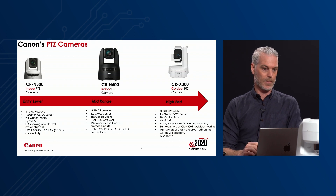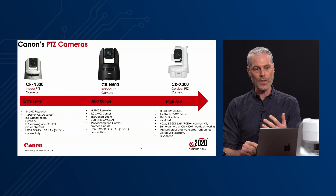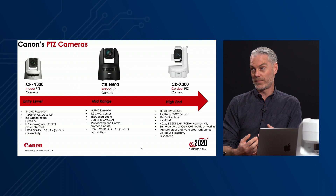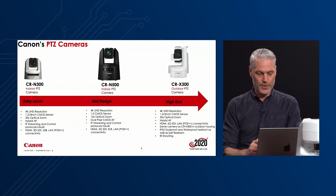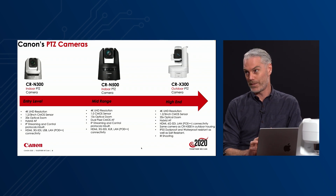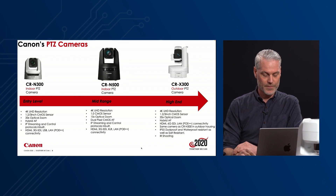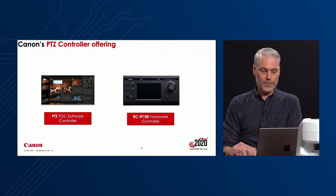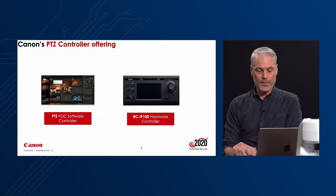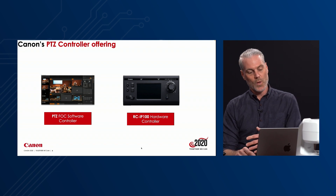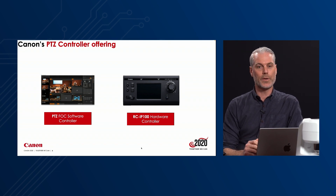The CR-N500 is the top indoor model. It has a larger sensor with less zoom range due to the sensor size, but it has a better autofocusing system compared to the CR-N300. As for the controller offering, we have the free-of-charge software controller — the Panned Zoom software — which you download from our website at no additional cost. That software can control multiple cameras, is PC-compatible only, and requires Windows 10.